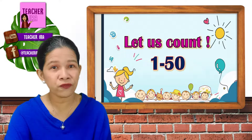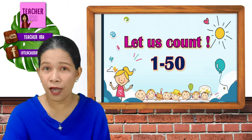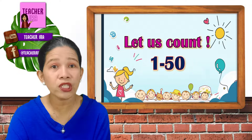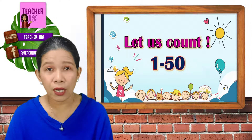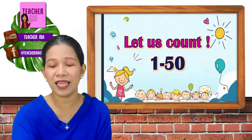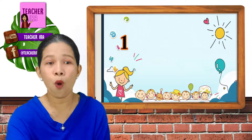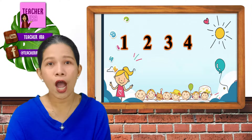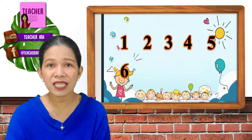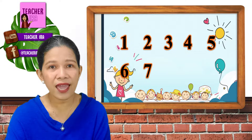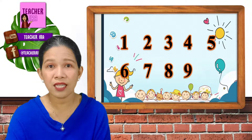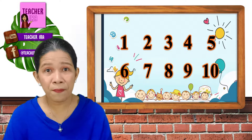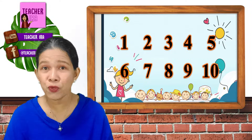Now, let us count from 1 to 50. Kids, I want you to follow after me. Let me tell you now, kids, that the basic of all the numbers is counting from 1 to 10. Let us take a look at this one: 1, 2, 3, 4, 5, 6, 7, 8, 9, 10. As you can see, all the numbers is just a matter of repetition of numbers 1 to 10.